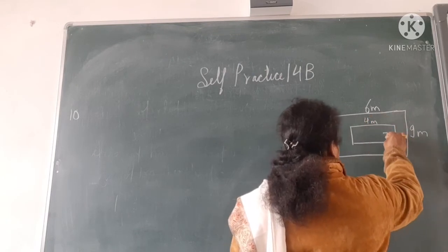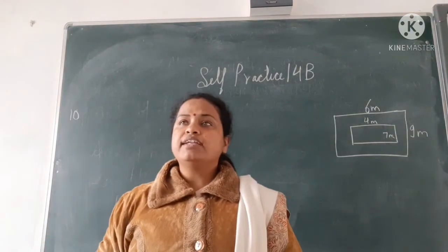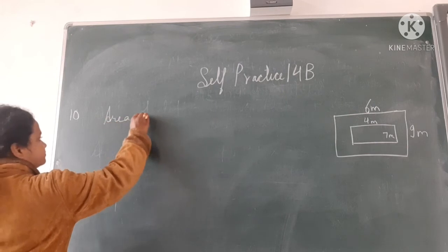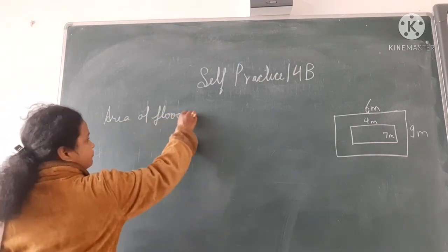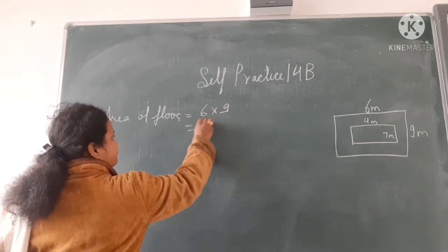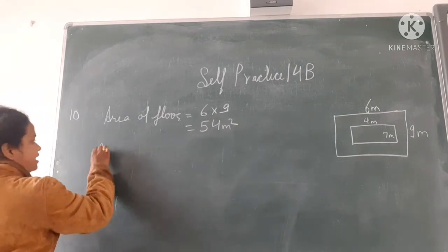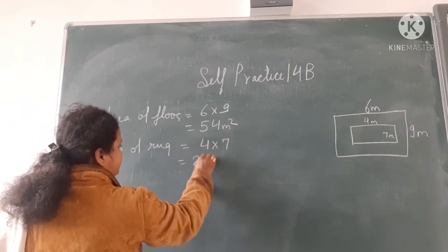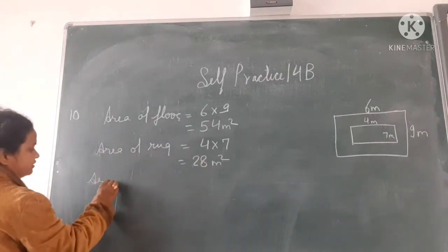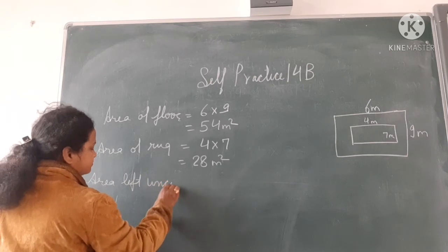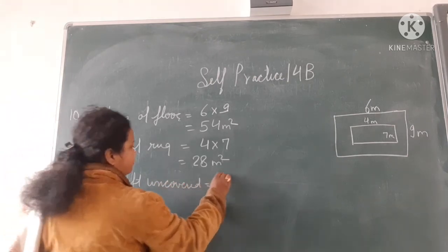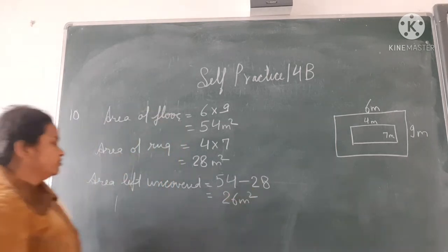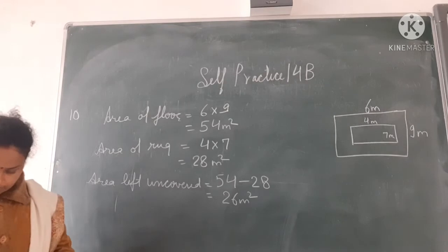The rug placed is 4 metre by 7 metre. It is asked what area is not being covered by the rug. Area of floor equals 6 into 9, that is 54 metre square. Area of rug equals 4 into 7, that is 28 metre square. Area left uncovered equals 54 minus 28, that is 26 metre square.